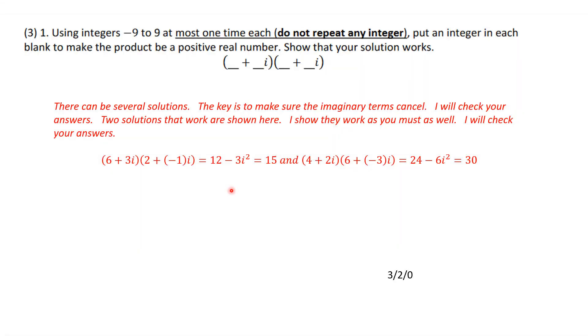Hello again. Problem number one, if you were to use the integers minus nine to nine, at most one time each, don't repeat any integer, to put an integer in each blank to make the product be a positive real number. Show that your solution works.